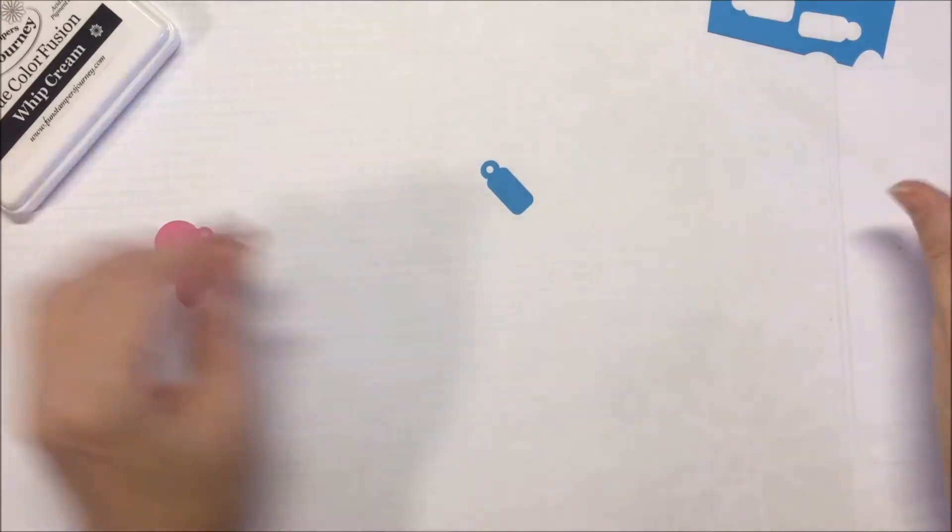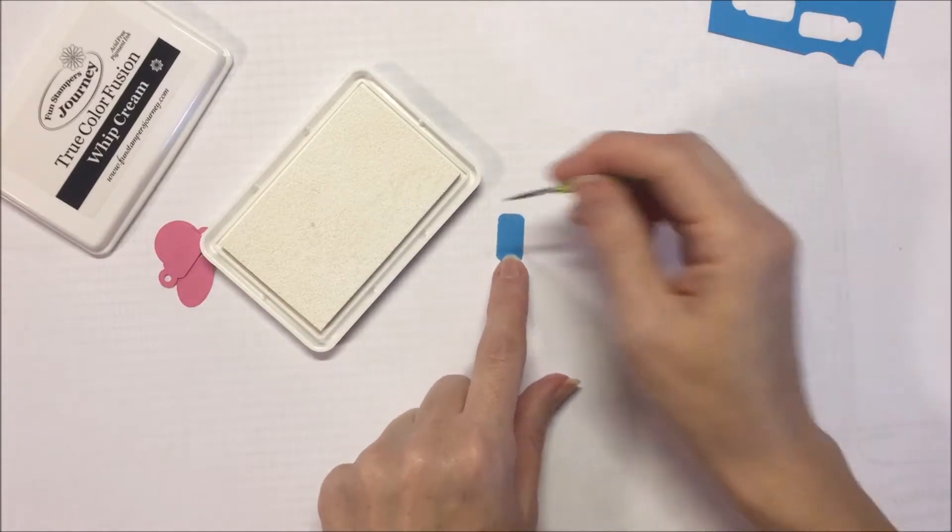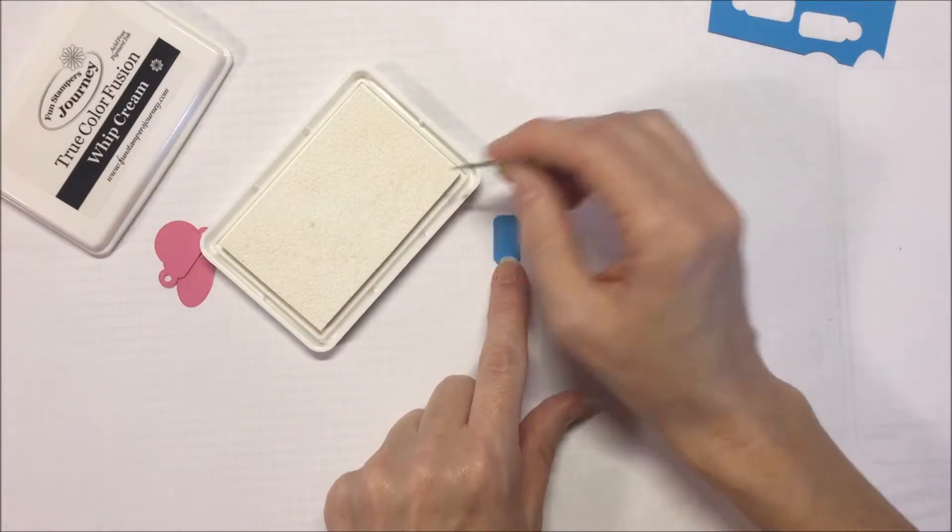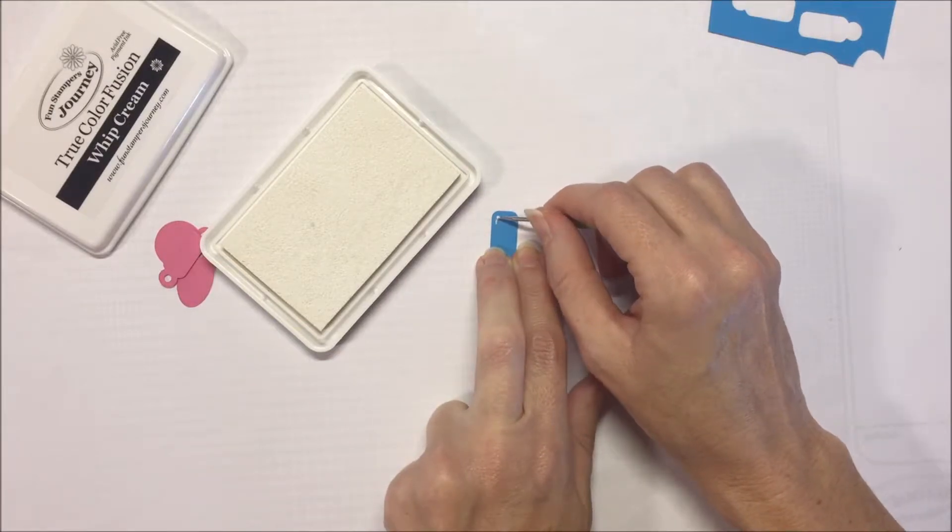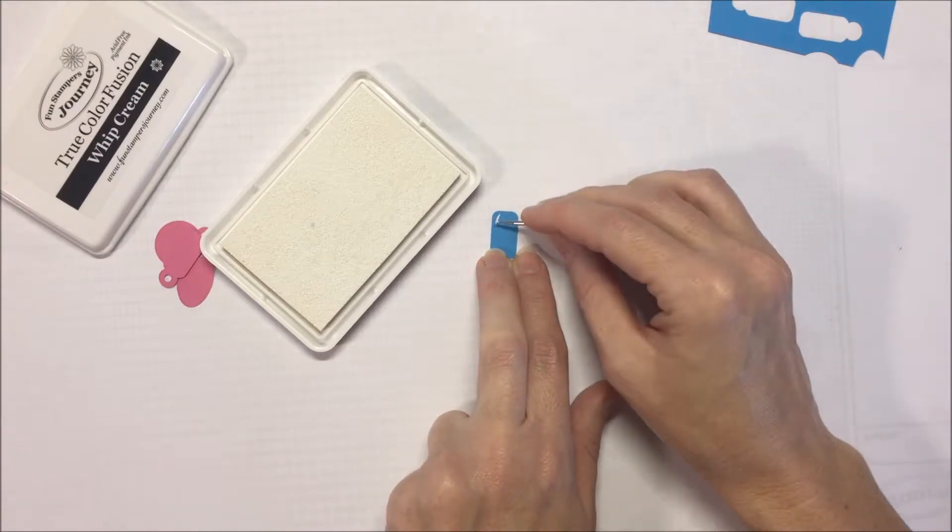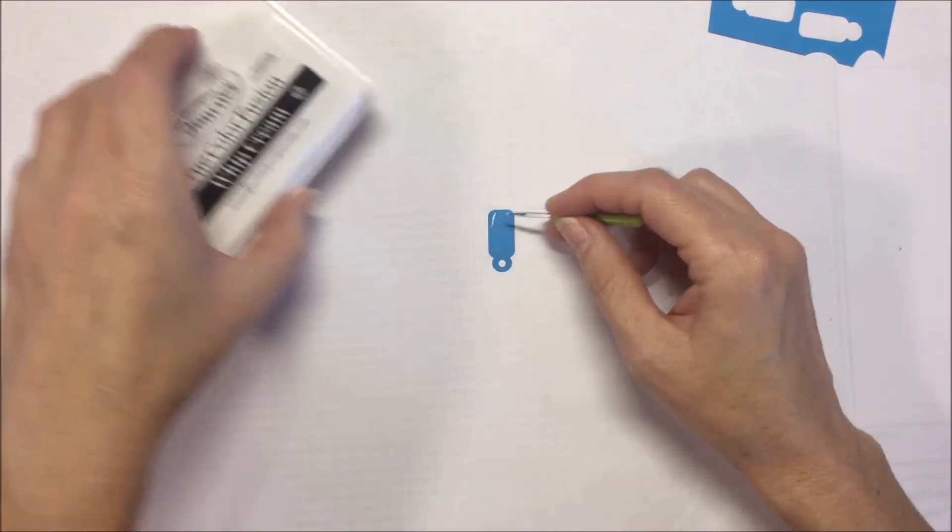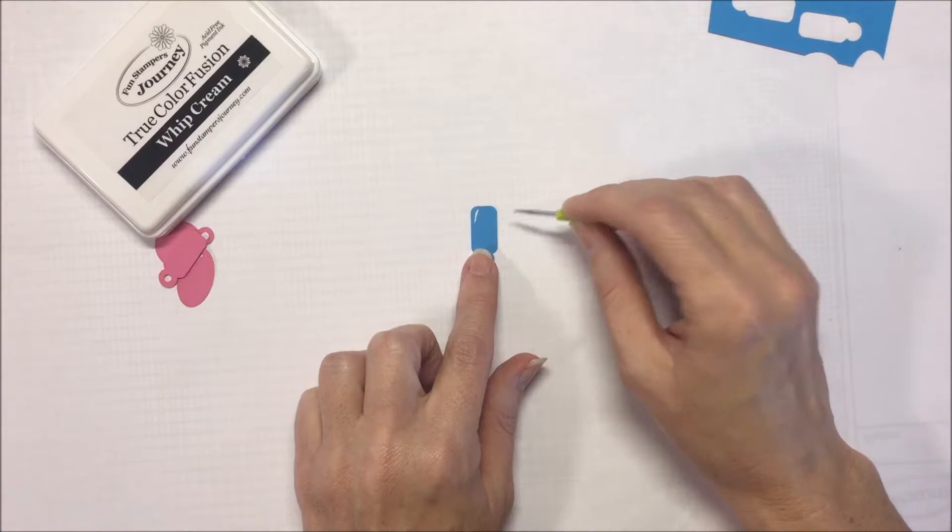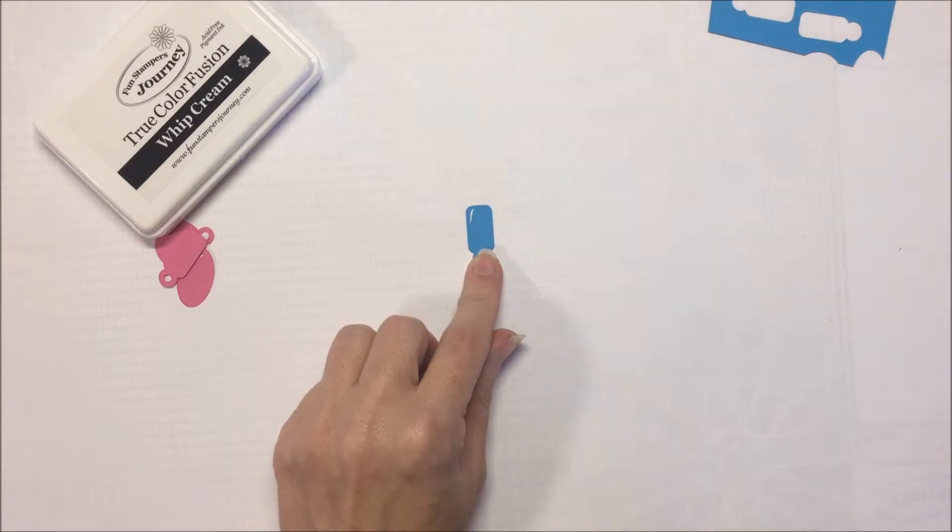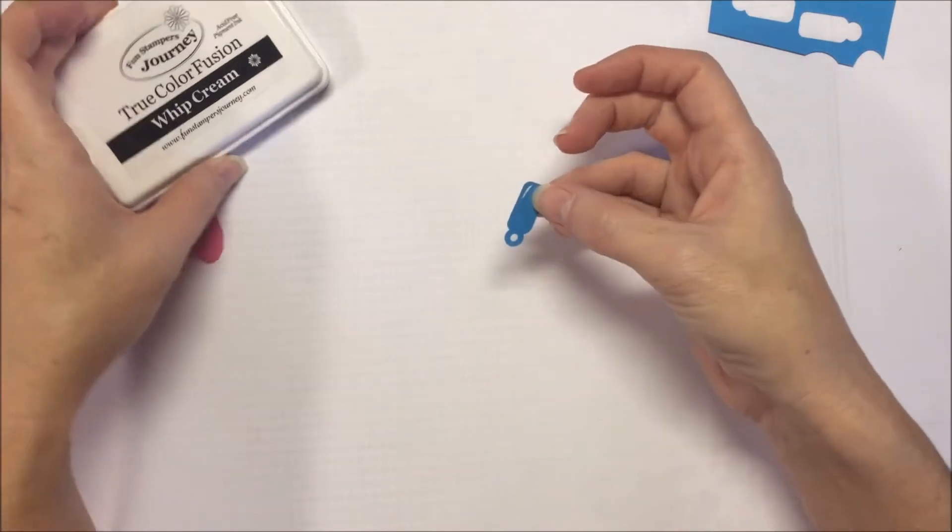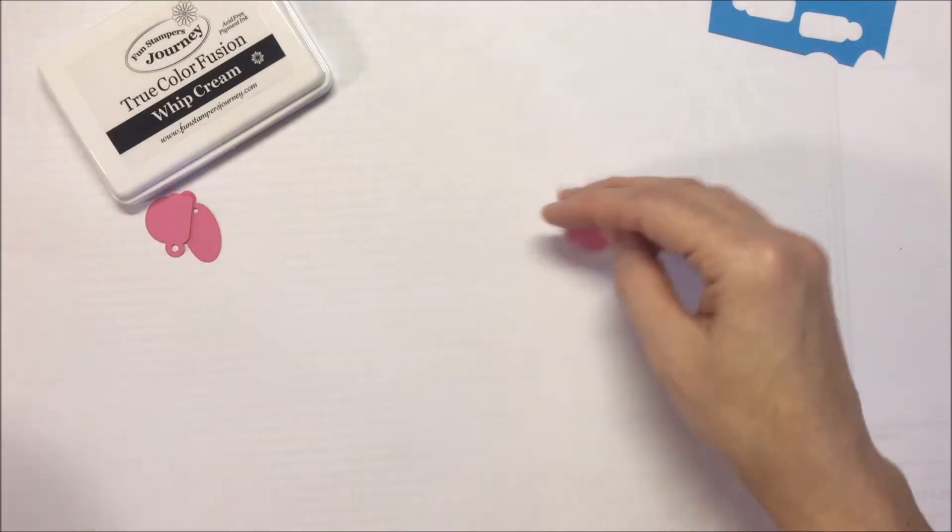And then what I did was using that same whipped cream ink and the smallest stylus with my little hole at the bottom. I wanted my balloon to have a slight three-dimensional look. So I just put some whipped cream ink to kind of give it that little highlight. And it works better to just kind of twist the little stylus there. And then you definitely want to heat set that with your heat gun so that it does not smear because the pigment ink takes longer to dry.